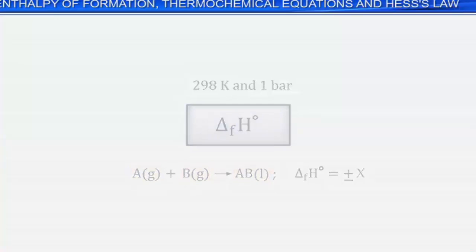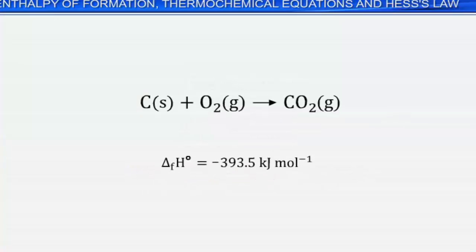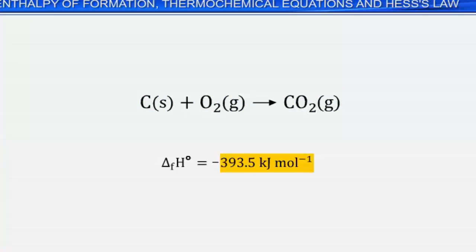For example, when carbon and oxygen in their elemental states react to form one mole of carbon dioxide, 393.5 kJ of heat is produced. Hence, we can say that the standard enthalpy of formation of gaseous carbon dioxide is –393.5 kJ per mole.